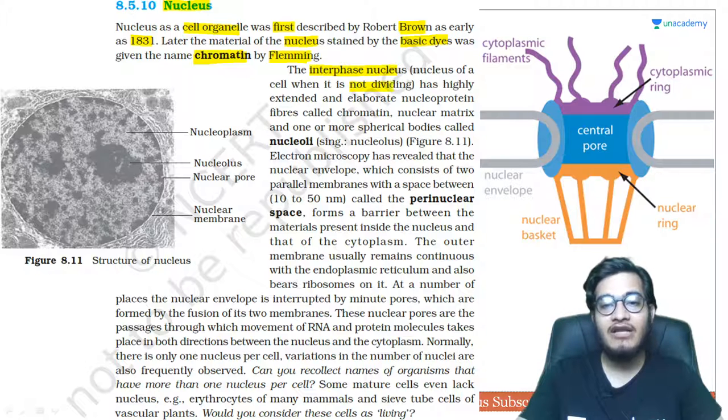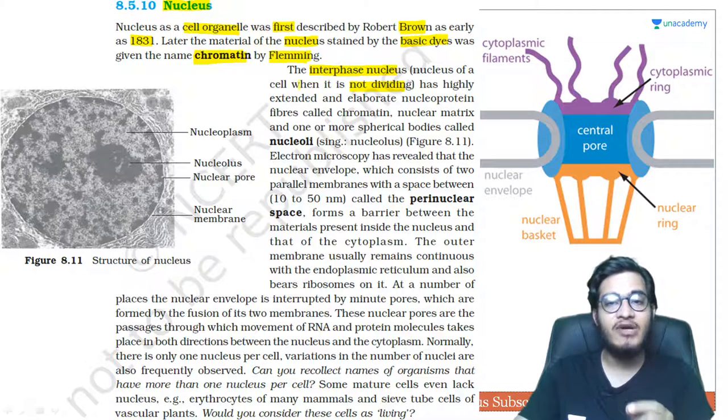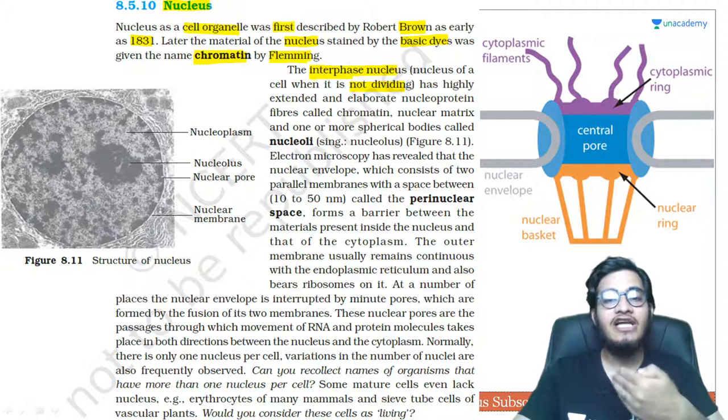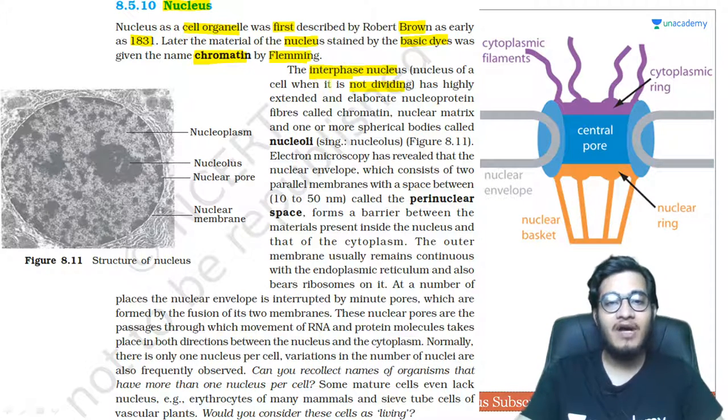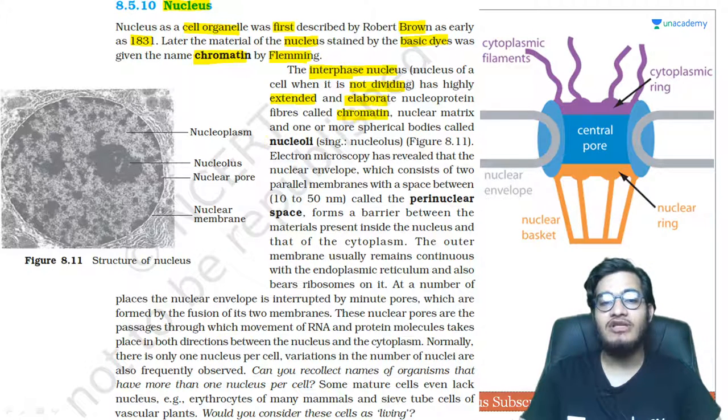When you talk about interphase nucleus, when the cell is not dividing - because cell divides in the M phase, that is mitotic phase of the cell cycle, and in interphase it's the preparatory phase where preparation for cell division is happening but the cell is not actually dividing - in interphase you see extended or elaborated chromatin which is nucleoprotein in structure.